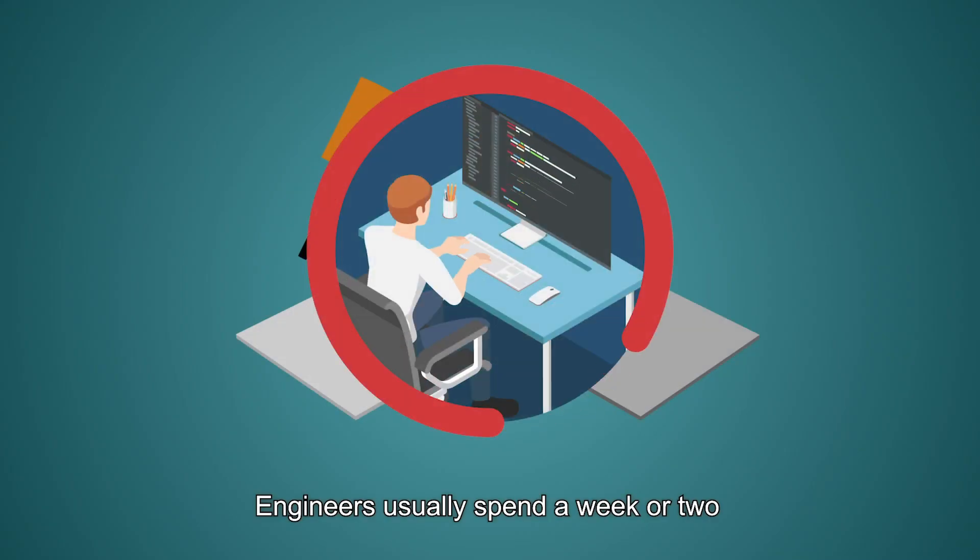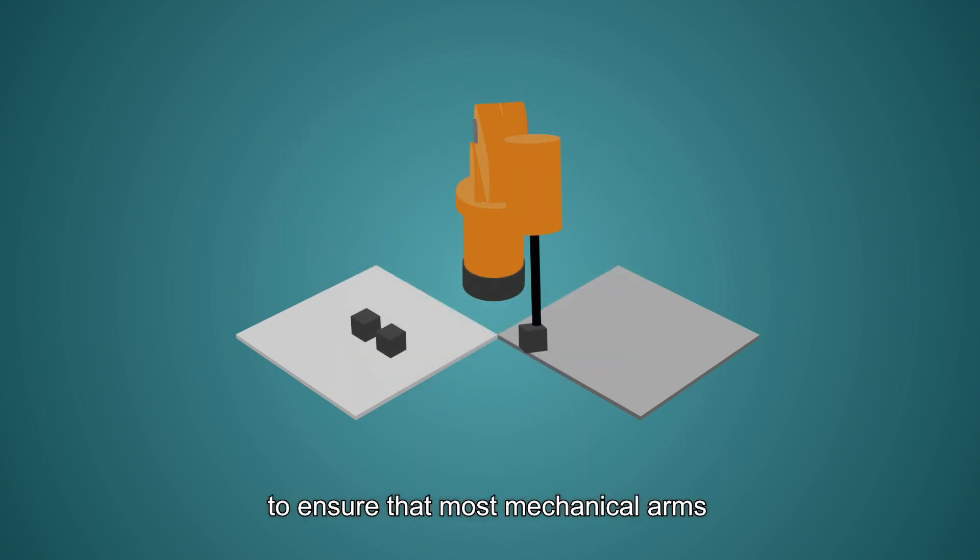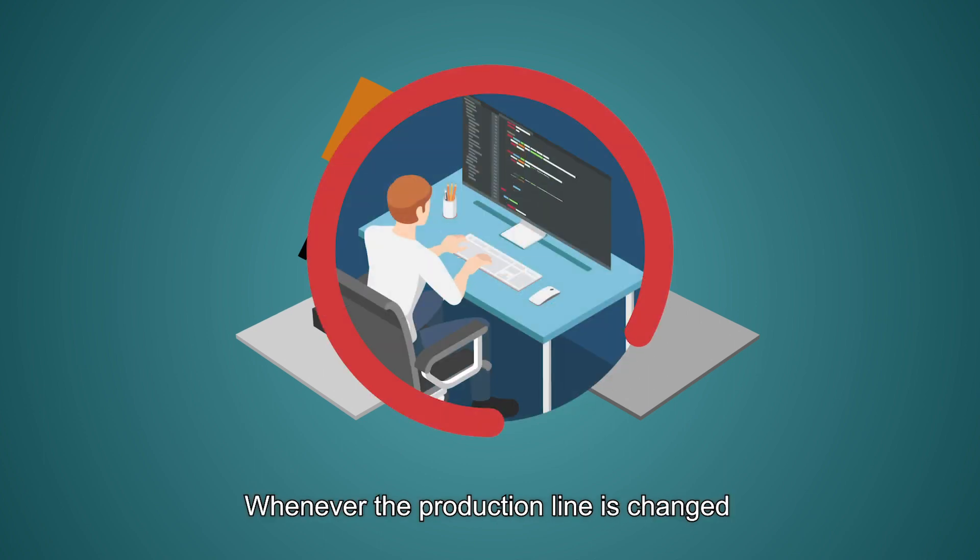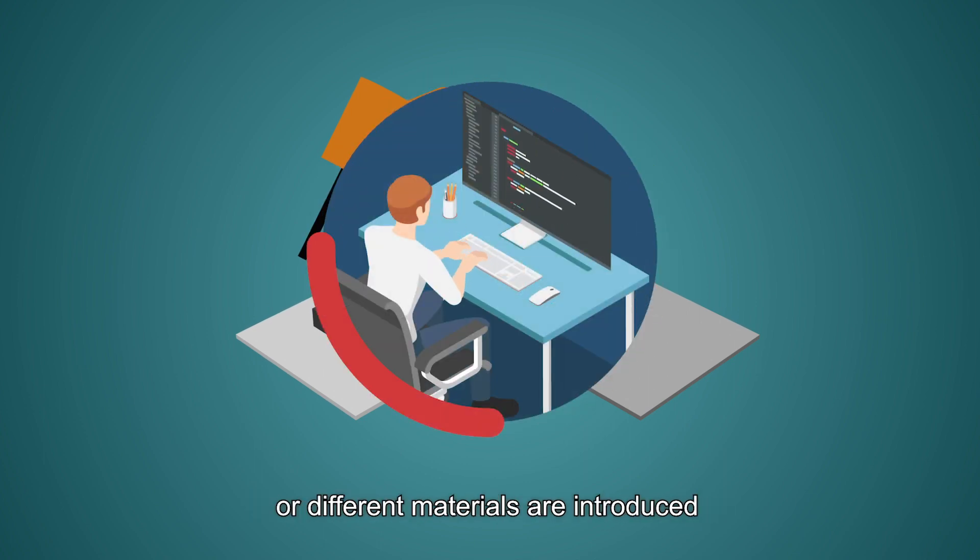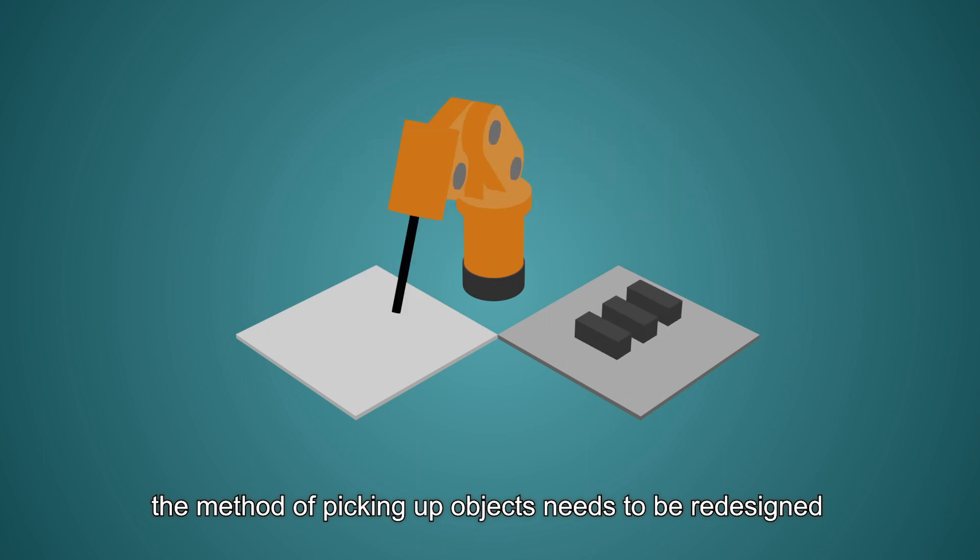Engineers usually spend a week or two writing and revising control programs to ensure that most mechanical arms are able to correctly pick up objects. Whenever the production line is changed or different materials are introduced, the method of picking up objects needs to be redesigned.